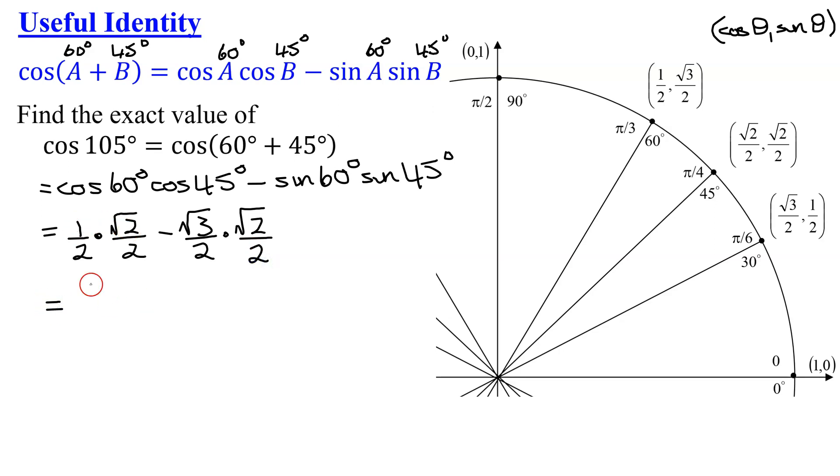So simplifying, 1 times the square root of 2 is the square root of 2, over 2 times 2 is 4, minus the square root of 3 times the square root of 2 is the square root of 6, divided by 2 times 2 is 4. So since they have a common denominator, I can just write the square root of 2 minus the square root of 6, all divided by 4. And that is the exact answer for the cosine of 105 degrees.